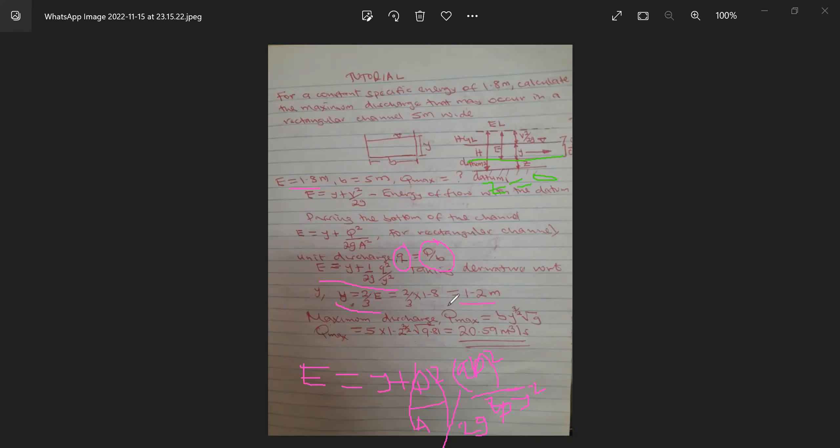So maximum discharge is given by Q max equals width of channel times the depth of water power 3 over 2 multiplied by square root of gravity, which we can replace. Our B is 5, our Y is 1.2 power 3 over 2 times square root of 9.81. So our maximum discharge will be 20.49 cubic meter per second.